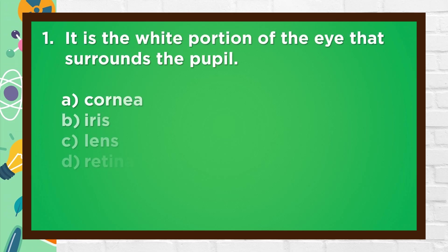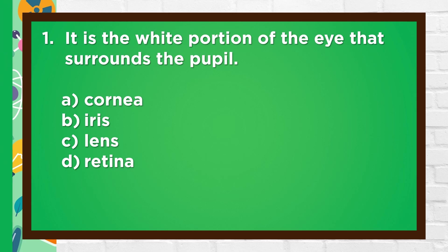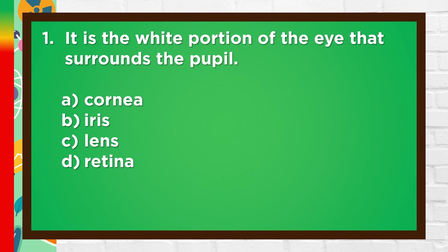Number 1. It is the white portion of the eye that surrounds the pupil. A. Cornea, B. Iris, C. Lens, D. Retina. The answer is B. Iris.